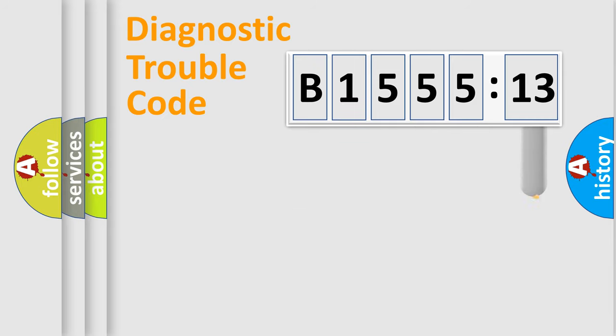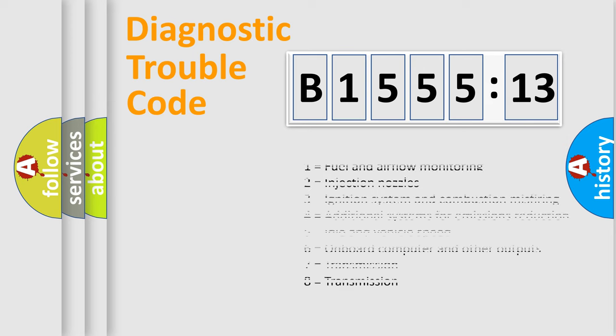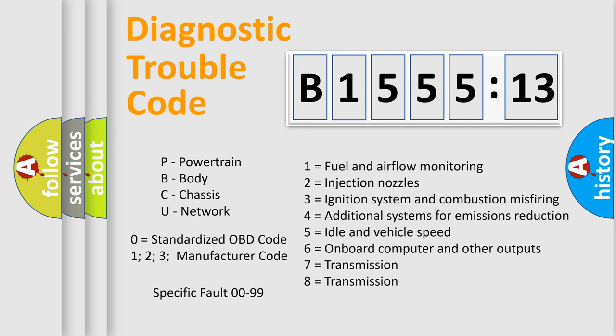Only the last two characters define the specific fault of the group. The add-on to the error code serves to specify the status in more detail, for example, a short to ground. Let's not forget that such a division is valid only if the other character code is expressed by the number zero.